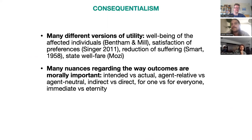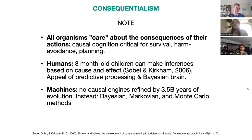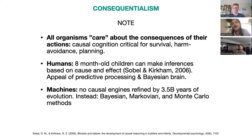Consequentialism: there are many versions, but what they all share is that outcomes are at the center of moral evaluation. More broadly, all organisms care about the consequences of their actions — causal cognition is critical for survival, harm avoidance, and planning. In humans, even eight-month-old children can make inferences based on cause and effect. In machines, causal engines were not refined by three and a half billion years of evolution, so we instead use Bayesian, Markovian, and Monte Carlo methods.